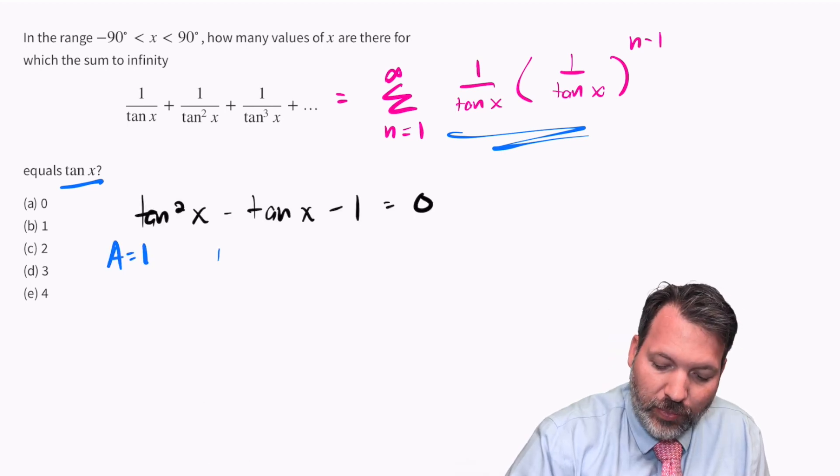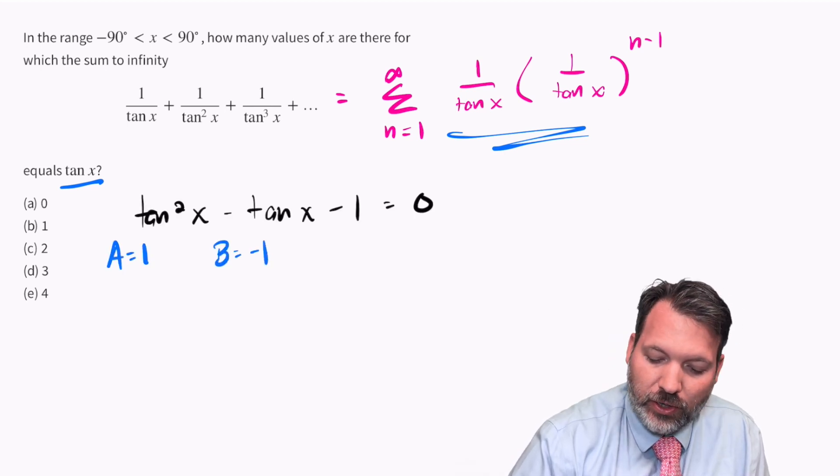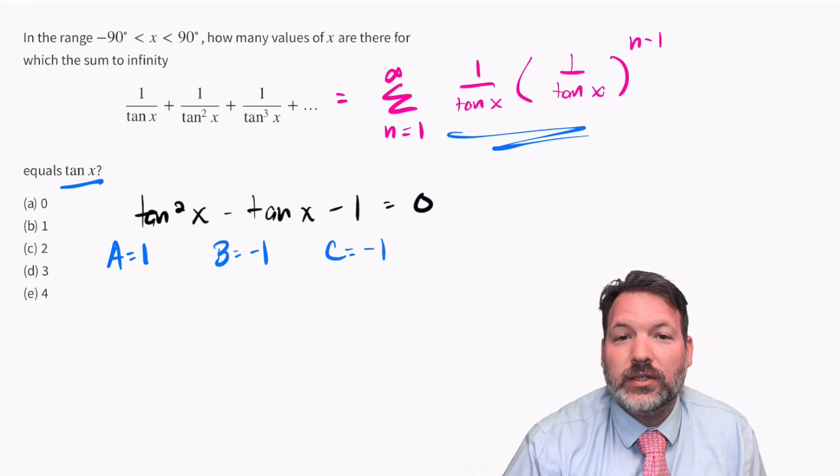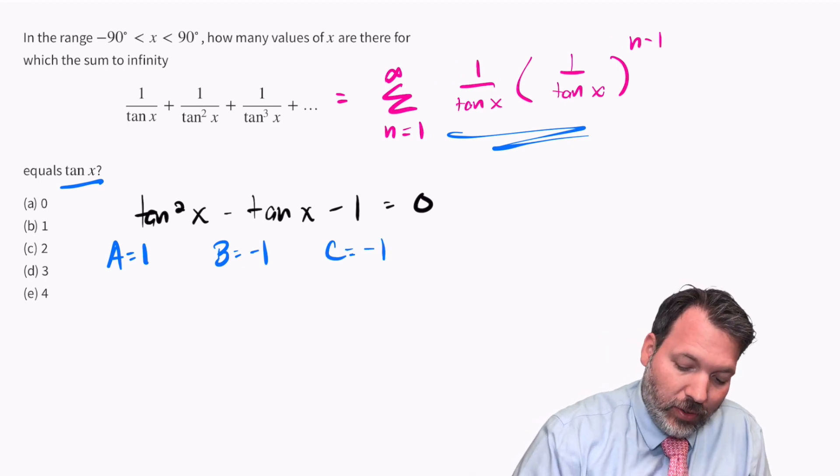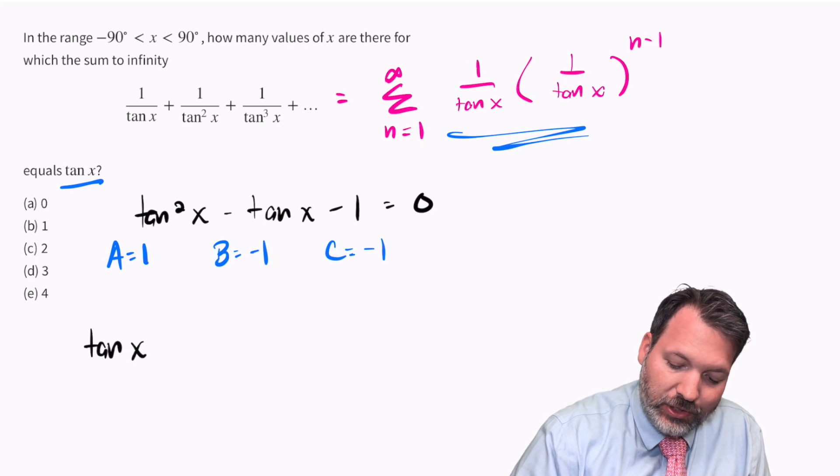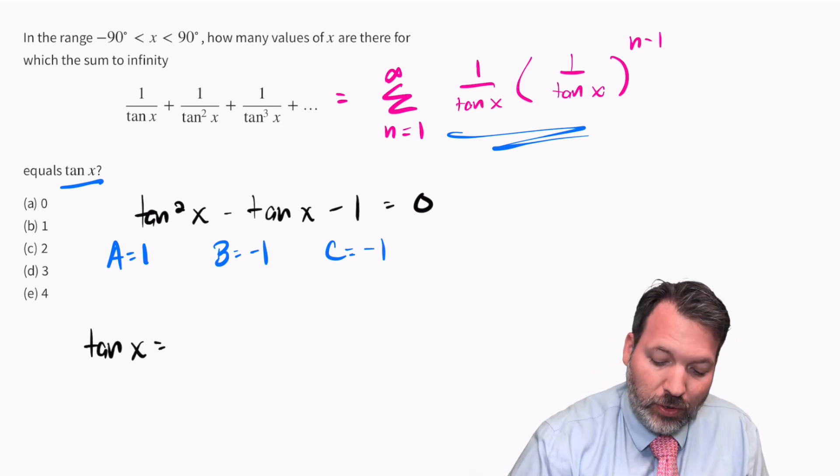The coefficient of our squared term is one, coefficient of our linear term is negative one, and the constant term itself is negative one. And again, it's not in terms of x, it's in terms of tangent x. So this quadratic should be true wherever tangent is equal to the negative of negative one.